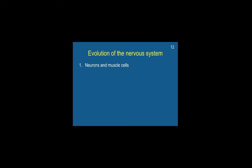Very early on, the nervous system began with neuron and muscle cells. Then that evolved to include a more complex nerve net, followed by bilateral symmetry and segmentation. Bilateral symmetry means we have a right and a left side. Segmentation means our body has segments — we have arms, we have legs, we have a torso. Ganglia are certain cells that support neurons in the brain.